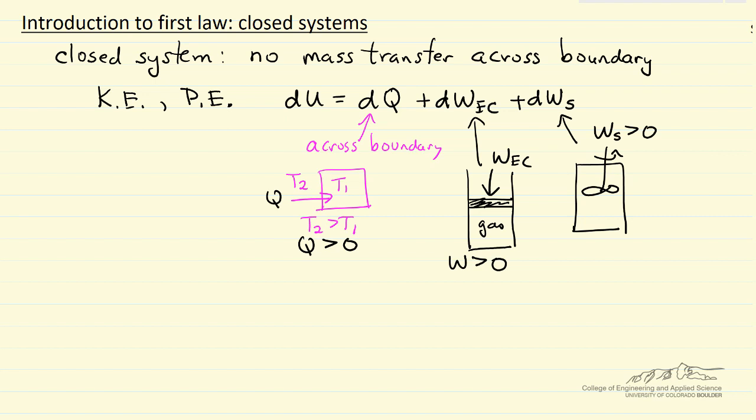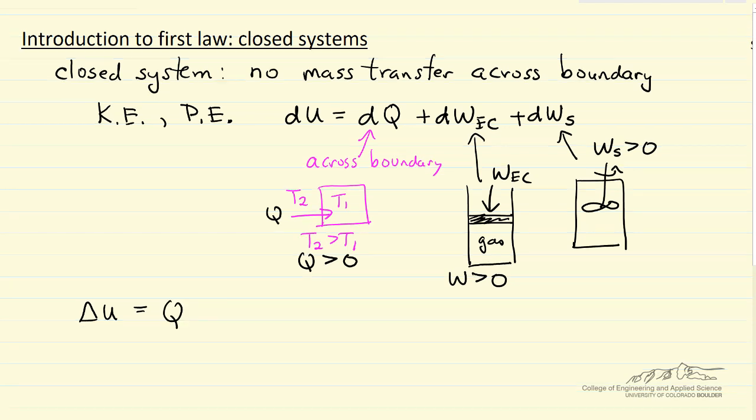Now if we look at the integrated form of the first law, where delta U is the change in internal energy between initial and the final state, equals Q plus work for expansion compression work plus work for shaft work.